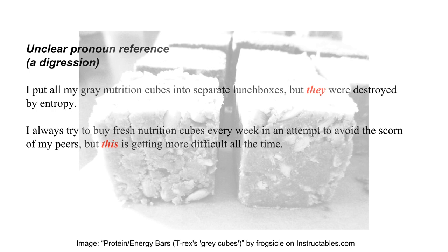In the second sentence, what is the antecedent of "this"? It could be "trying to buy fresh cubes," or it could be "avoiding the scorn of my peers." Even if you have a pretty good guess, the sentence is still ambiguous.